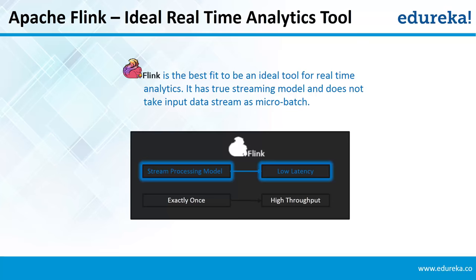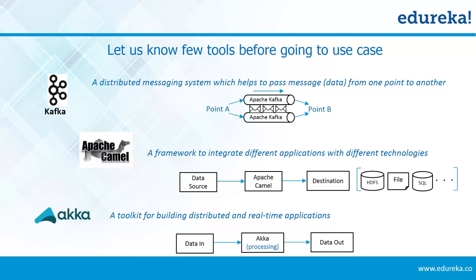Before we go ahead with the use case, let us get acquainted with a few tools. The first is Apache Kafka — a distributed messaging system which helps to pass messages or data from one point to another. Apache Camel is an open-source Java framework that focuses on making integration easier, allowing you to integrate different applications with different technologies using the same concept. Finally, Akka is a toolkit used for building highly concurrent, distributed, and fault-tolerant real-time applications on the JVM.